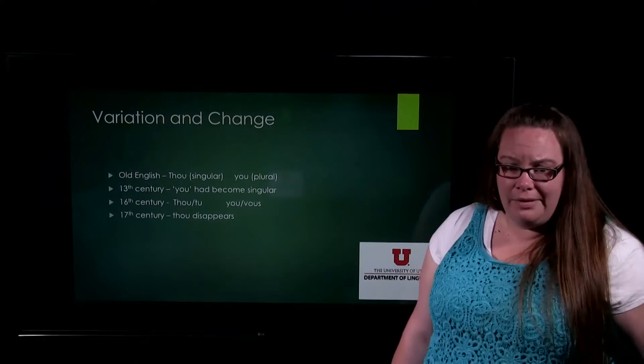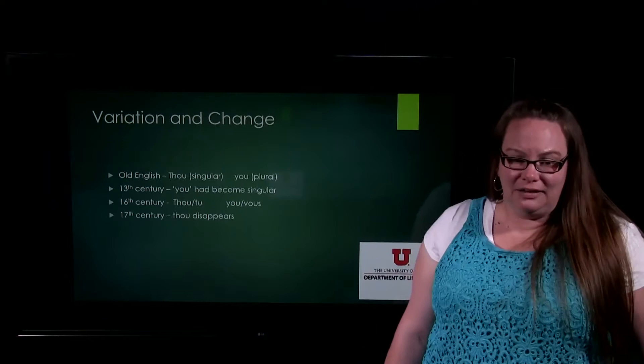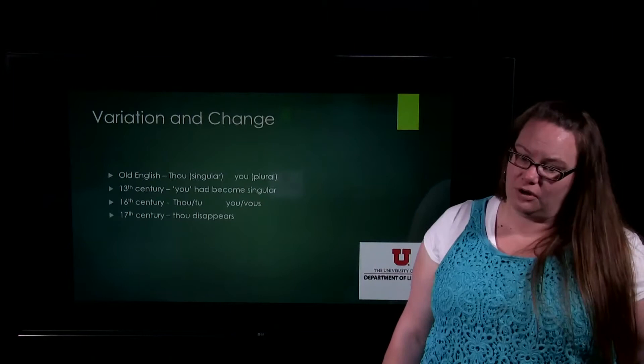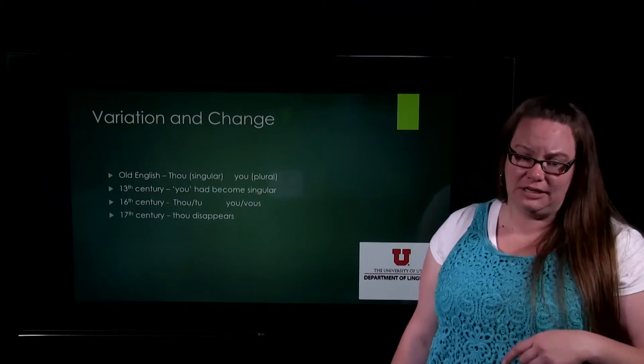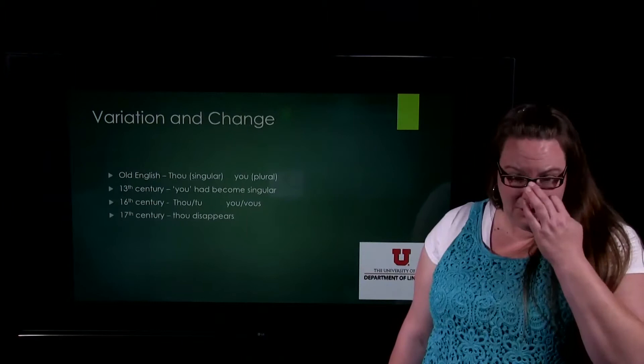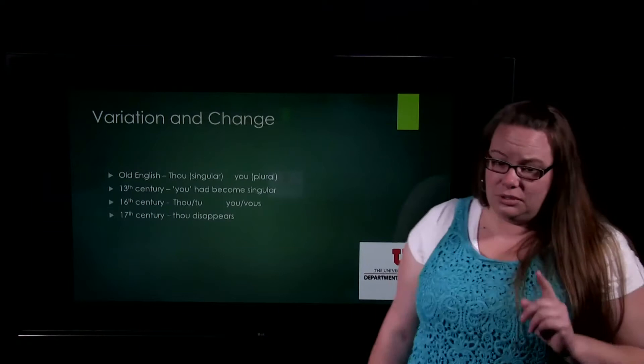Let's talk about some variation and change inside of English. Old English had the word 'thou,' which you've probably heard before but don't use in regular speech, and also the word 'you.' 'You' meant you plural, and 'thou' meant you singular — just one person. So if you were talking to a group, you'd use 'you'; if talking to one person, you'd use 'thou.' In the 13th century, the plural 'you' starts to become singular as well.